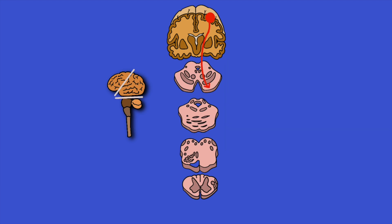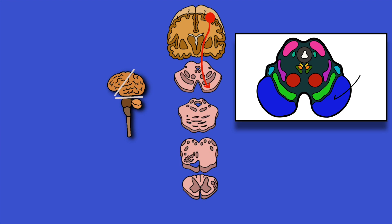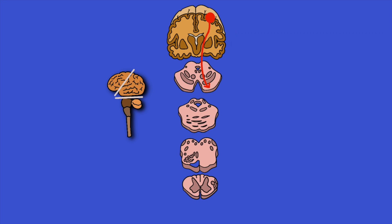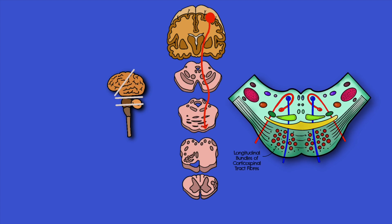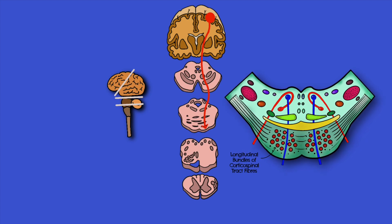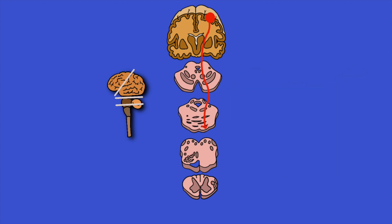From the internal capsule, the fibers descend further into the midbrain. Looking at a transverse section, through the midbrain they travel anteriorly through the cerebral crura. It's clinically important to know that these fibers are traveling in the anterior portion of the brainstem. From the midbrain we then descend into the pons, where the fibers continue to travel anteriorly. At this level we can also see structures including the nucleus of the facial nerve and the abducent nerve, and connections to the cerebellum.